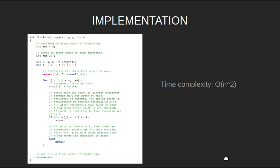Now let's look at the implementation. We get string s and k as input. Initialize answer as 0. Create an integer count array to store the count of each character. To traverse the string s, set the character count of each character to 0. We find substrings starting from i, increment the character count of the current character. If the count of the character is less than or equal to k, this is a valid substring and we increment the answer. Else, we break the loop, as subsequent substrings from this starting point will also have count greater than k and hence are invalid. Finally, return the value of answer.